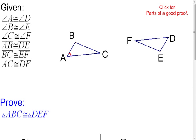The given tells us that angle A is congruent to angle D, angle B is congruent to angle E, and angle C is congruent to angle F. I've marked the corresponding angles as congruent. Now for the sides: segment AB is congruent to segment DE, segment BC is congruent to segment EF, and segment AC is congruent to segment DF. That's all the given information marked up in the picture.